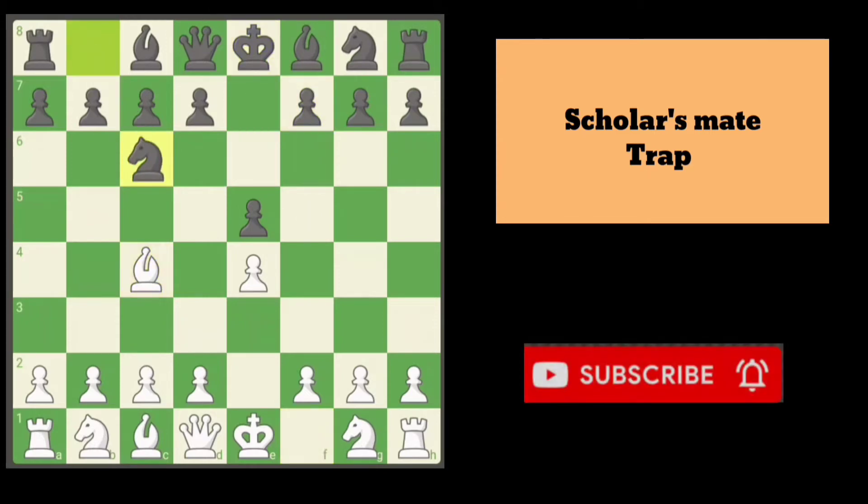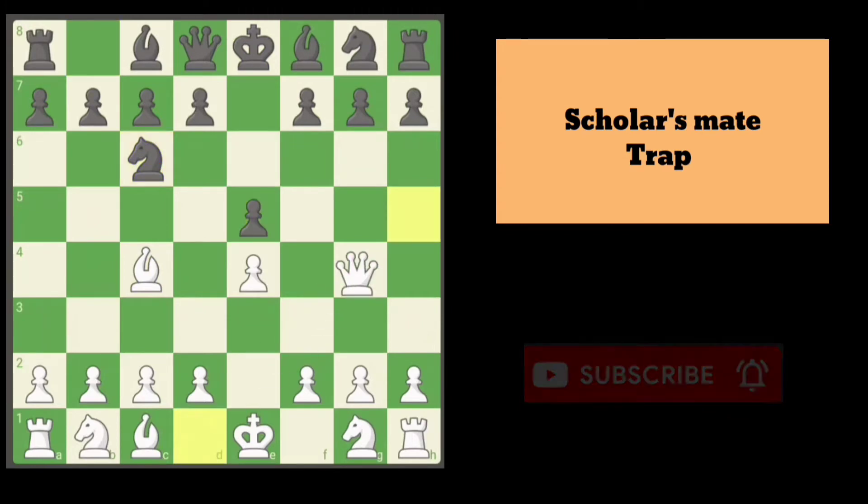After Black develops knight c6 to defend the e5 pawn, White plays queen to h5, once again attacking the f7 pawn.